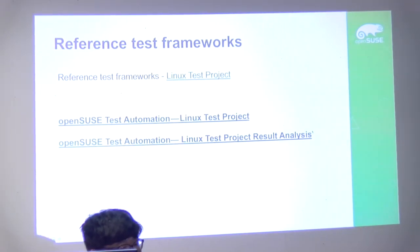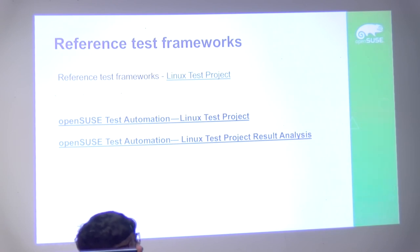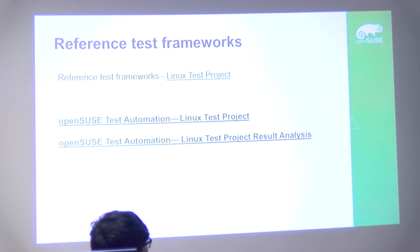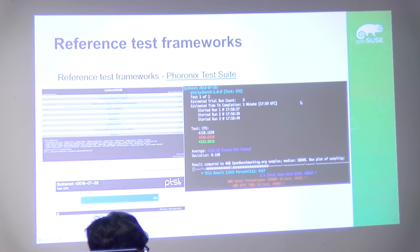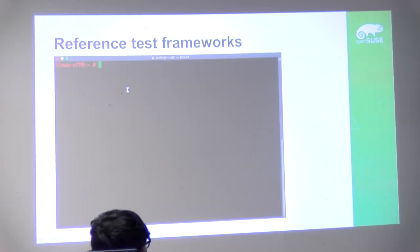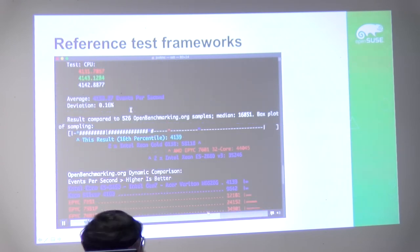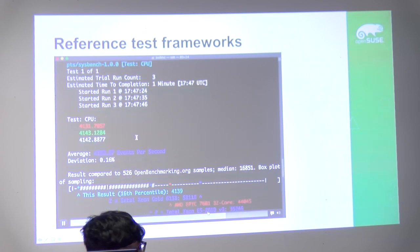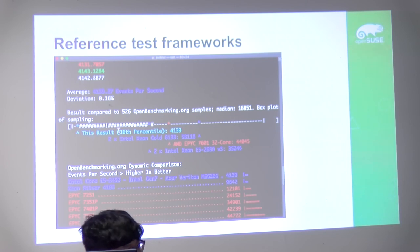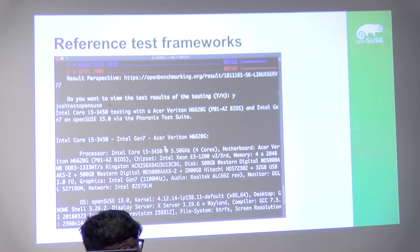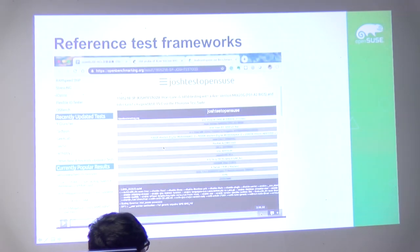The third is the Linux Test Program, a very old program based on C language with around 1,800 test cases to test the Linux kernel. Finally, there's the Phoronix Test Suite, which is also open source. It's benchmark-based — at the end of the test it gives you benchmark numbers to compare your model against others, showing how your CPU performs relative to other hardware. Results are posted on the website for others to reference.